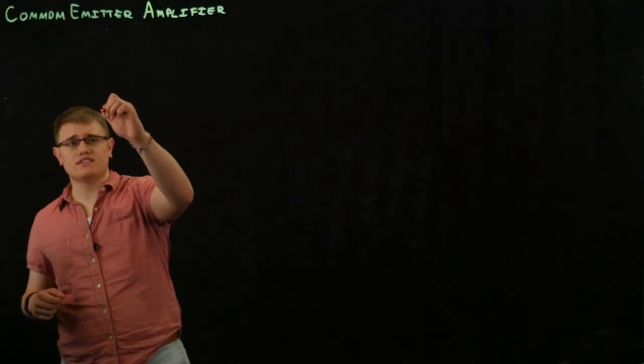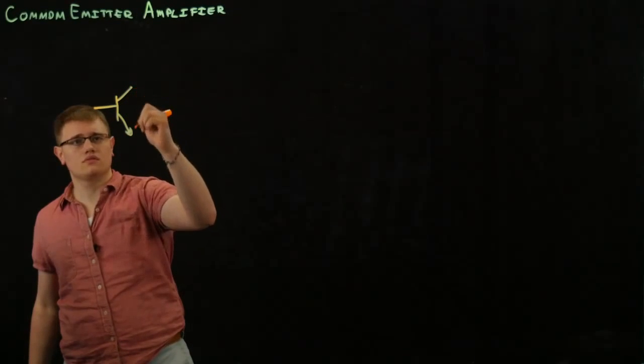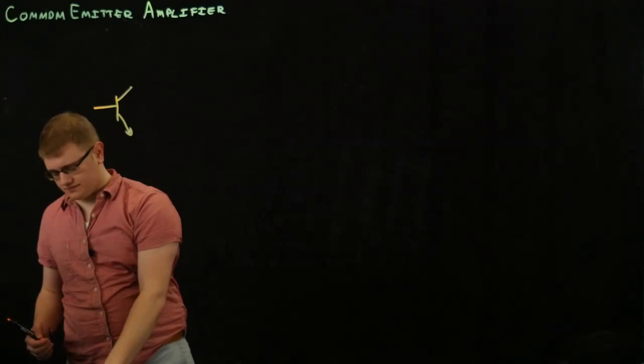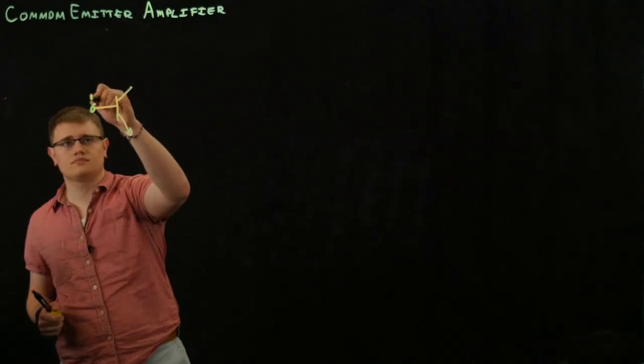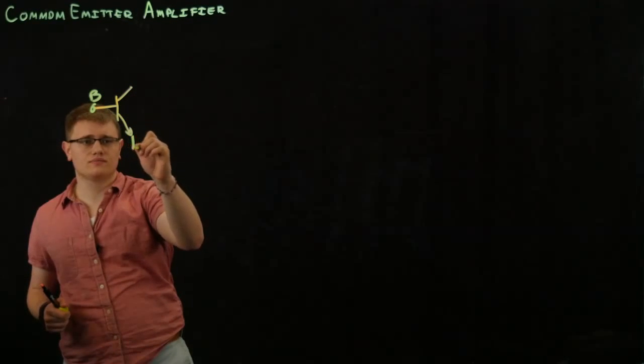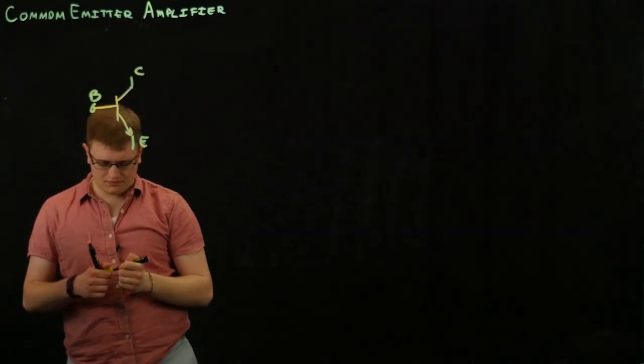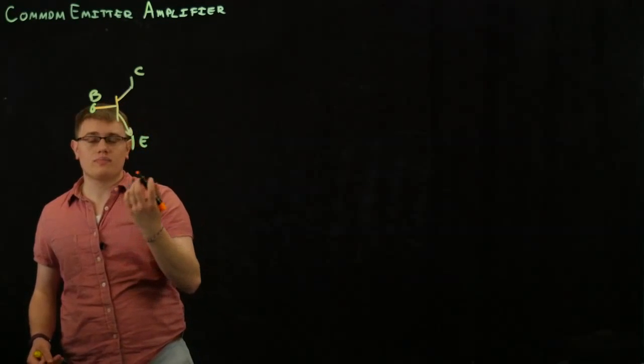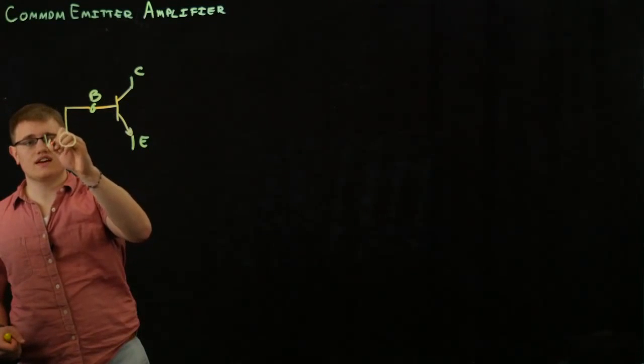We have your BJT right here, and you have your base. You have your emitter, and you have your collector. Now, our base is going to be connected to our input voltage, VI.